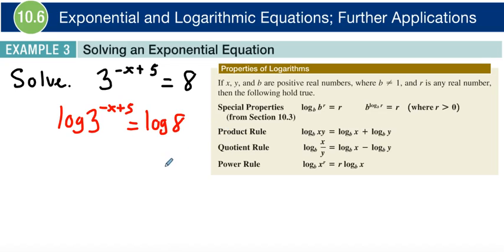Okay, so now we're going to use our power rule right here. And we're going to move the negative x plus 5, we're going to move that down. So it's just like taking this r right here, our exponent, and we can move that in front of the log there.